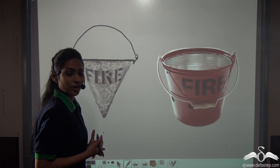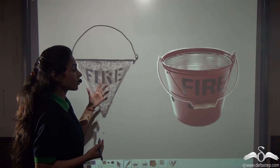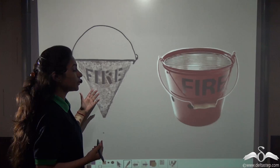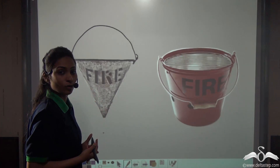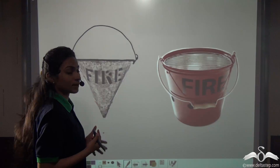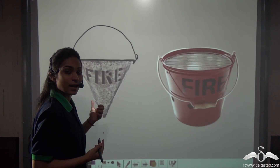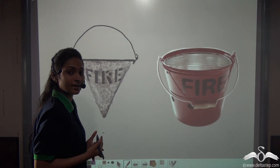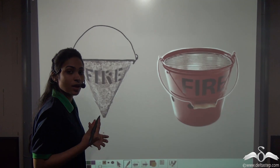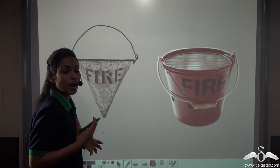In the 20th century, people used fire buckets which were in the shape of a cone. These buckets were hung on a wall and sand was filled inside them. They were used in case of fire to put out the fire.